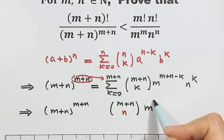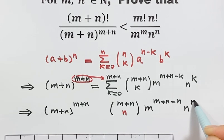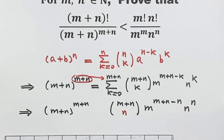Then we have (m plus n) choose n, times m to the power (m plus n minus n), times n to the power n. So drop the other terms. This is the only term we keep.